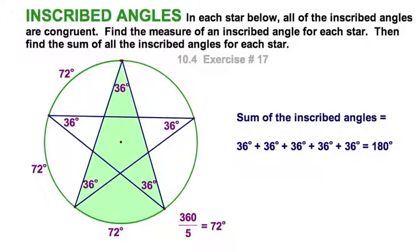But I could have expected that because the sum of all the 72s is, of course, going to be 360 degrees. It's going to complete a full circle. And therefore, since each inscribed angle is one-half of its intercepted arc, then one-half of the sum is going to give us another sum of 180.